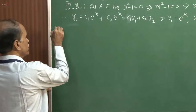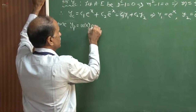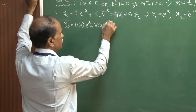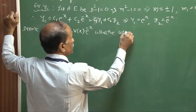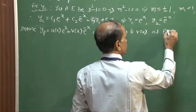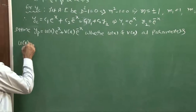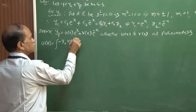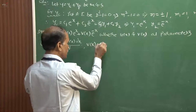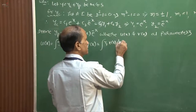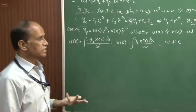Therefore, the complementary function is y_c = c₁e^x + c₂e^{−x}. With this complementary function, we find the particular integral using variation of parameters: y_p = u(x)·e^x + v(x)·e^{−x}, so y₁ = e^x and y₂ = e^{−x}. Define u(x) and v(x) as parameters, and compute u(x) = ∫[−y₂·X(x)/W] dx and v(x) = ∫[y₁·X(x)/W] dx, with the condition that W ≠ 0.